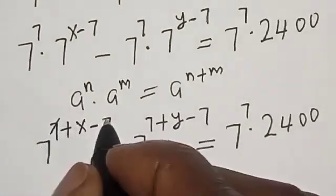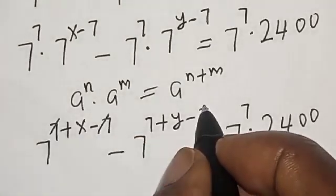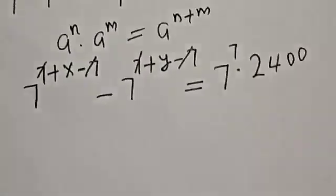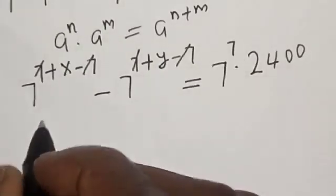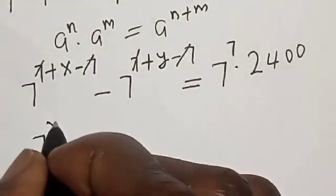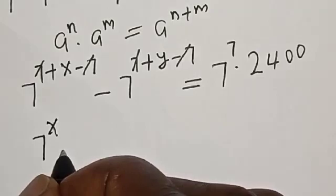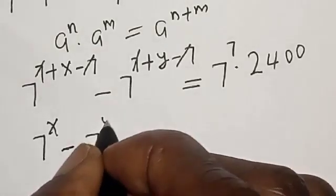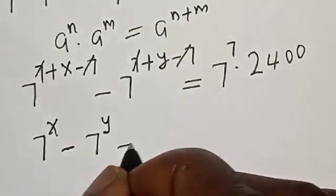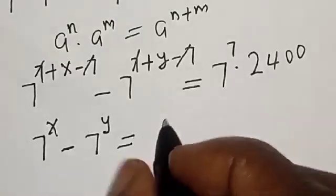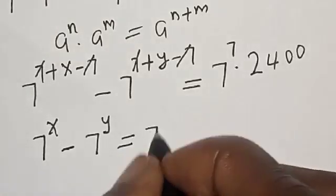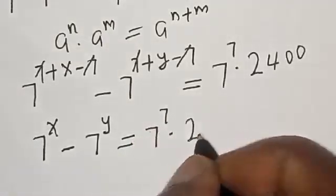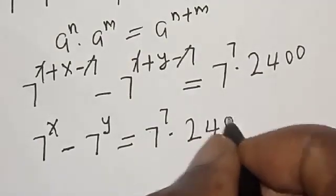This one will cancel this 7. This minus 7 will cancel this plus 7. Then, 7 raised to the power s minus 7 raised to the power y is equal to 7 raised to the power 7 multiplied by 2400.